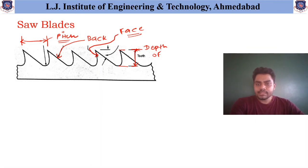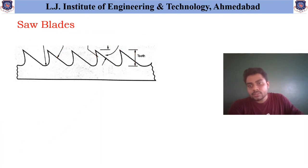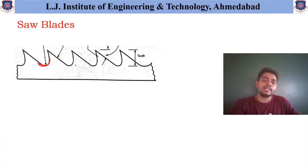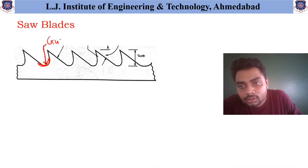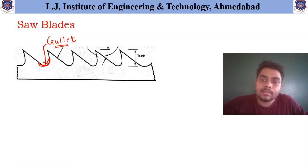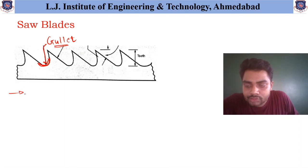These are the major parts available in the saw blades. The other part available, as you can see over here, is the gap which helps the chips to move from one portion to another — this portion is called the gullet. This gullet helps to remove the chips from the particular cutting section.